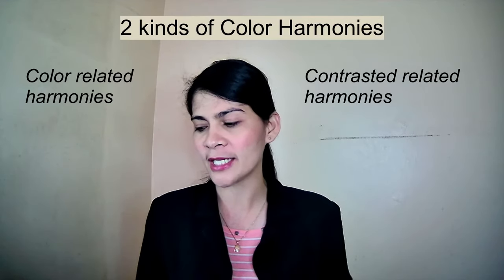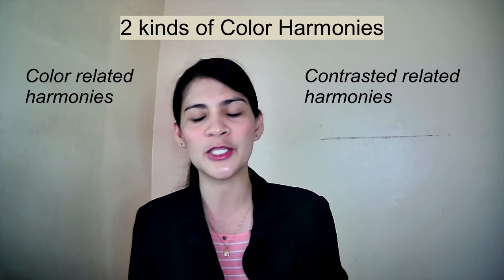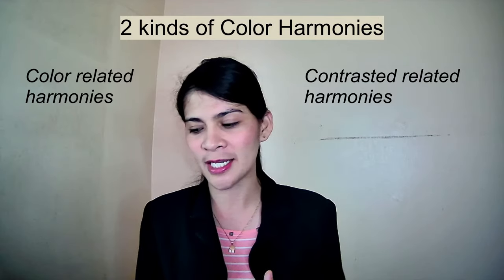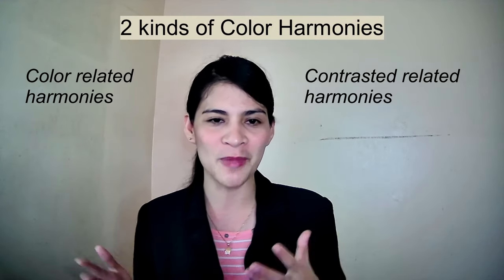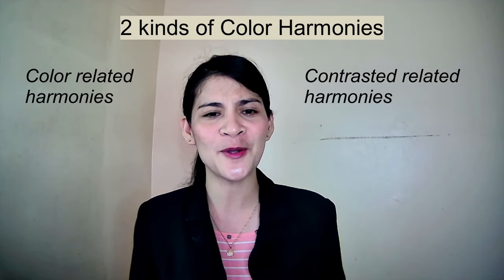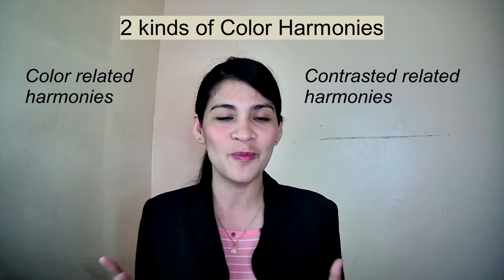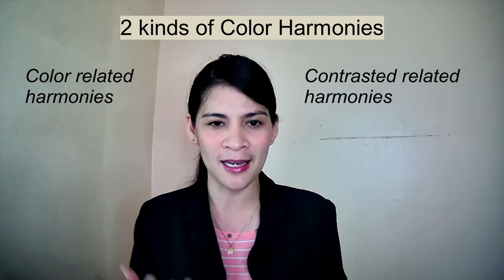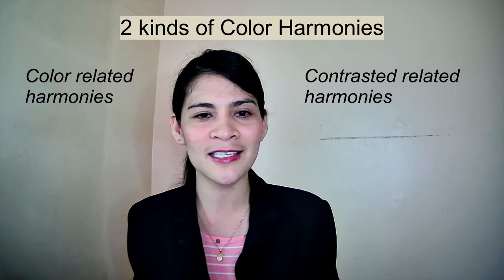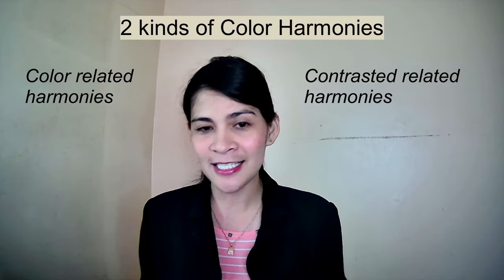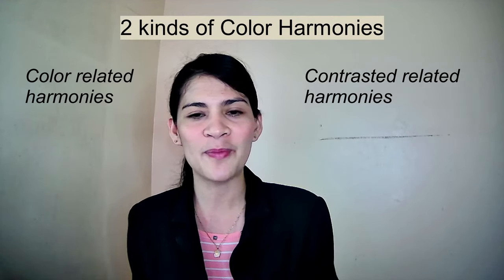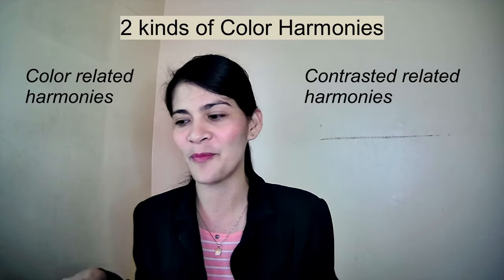There are two kinds of color harmonies: related color harmonies and contrasted color harmonies. Related color harmonies are easy to use because the colors are all related. Contrasted color harmonies are more difficult because you have to blend contrasting colors together. But there are people who are gifted at it. Being an artist is not just a simple talent — it needs analysis, strong imagination, strong interpretation, and the ability to express yourself through art.